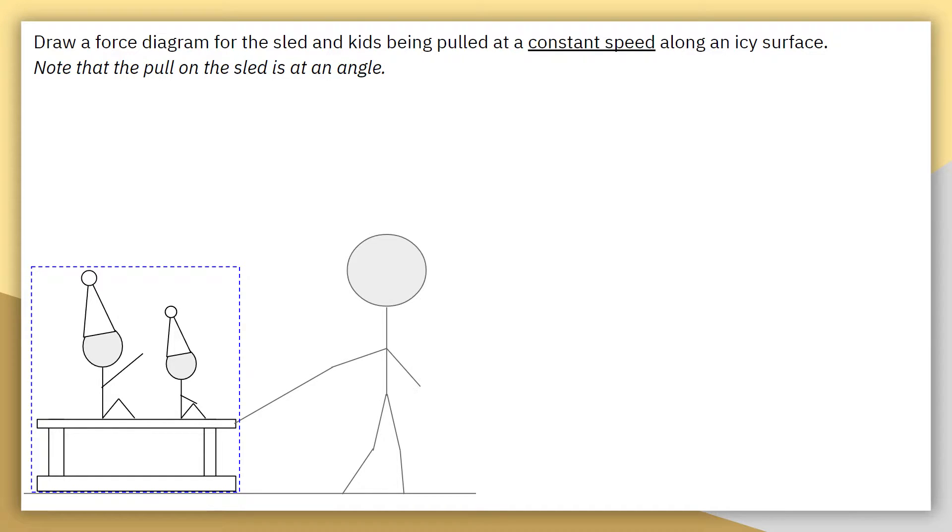So, I identify my system boundary, which is the two kids and the sled. I shrunk the system down to a single dot, and then because I'm assuming that the sled and the kids are moving to the right, I have my x-axis pointing to the right and then also extending to the left, and then my y-axis is perpendicular to that.